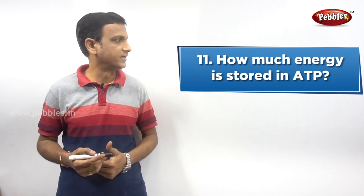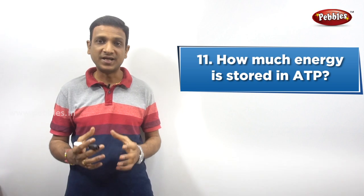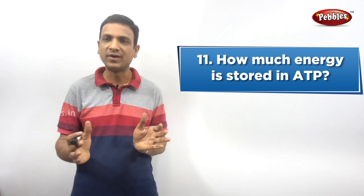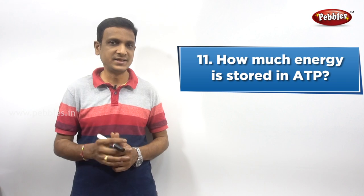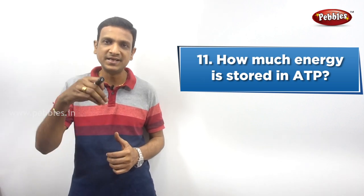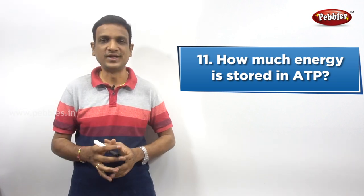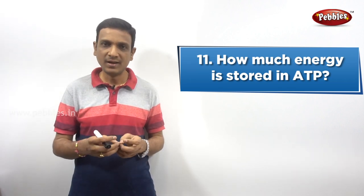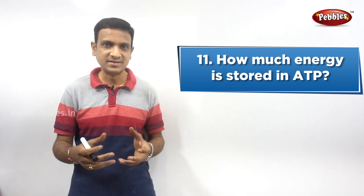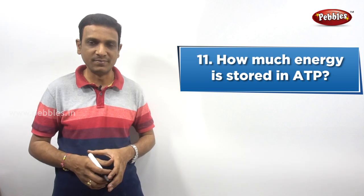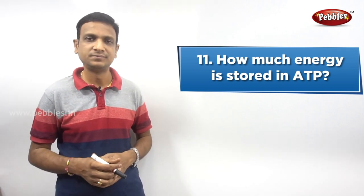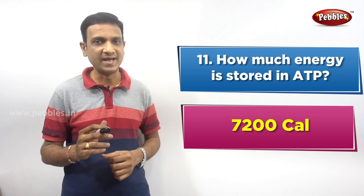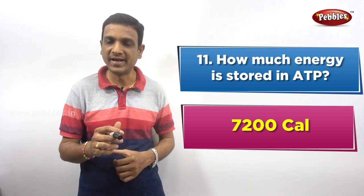Eleventh question: how much energy is stored in ATP? ATP is also called cell currency. Energy required in cells for different activities is provided by ATP molecules, which store energy. When energy is needed, ATP breaks into ADP and releases energy. Each ATP contains seven thousand two hundred calories of energy.